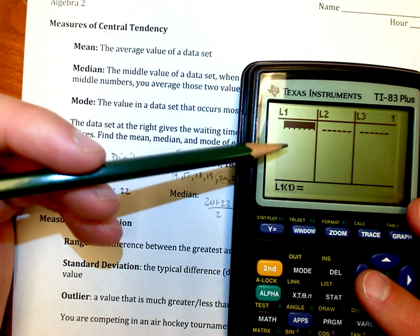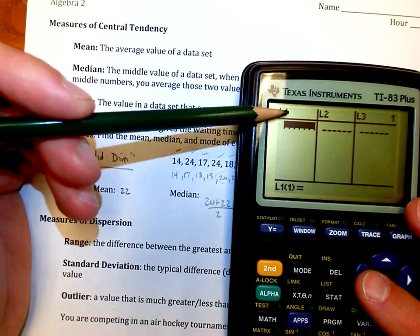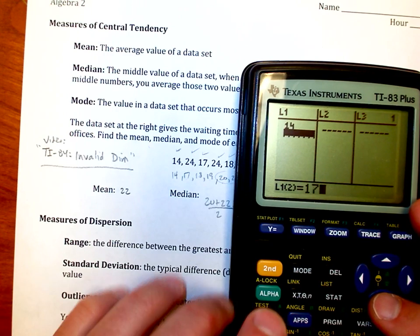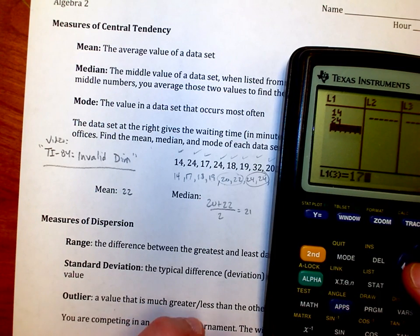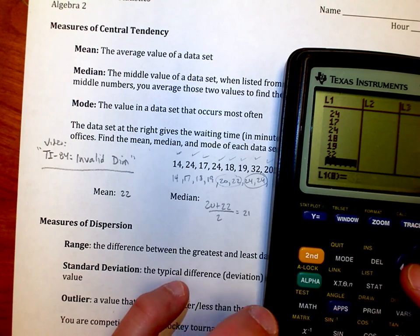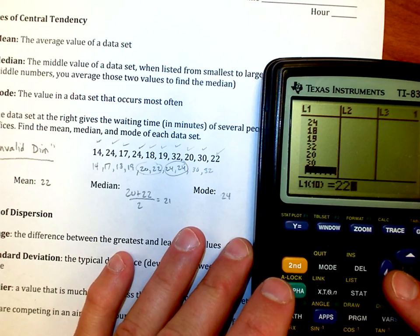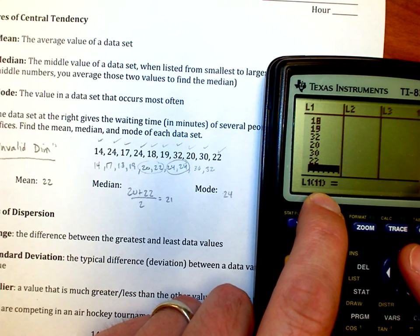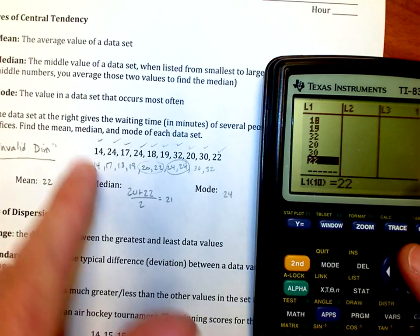In this case, we only have one set of values. I'm going to type in 14, then 24, then 17, 24, 18, 19, 32, 20, 30, and 22. So I have 10 values here. It says list number one, 11th value. I can tell here that I have 10 values. That means I've got them all.